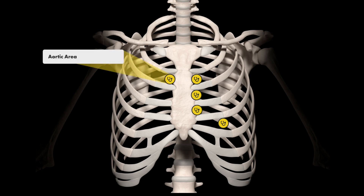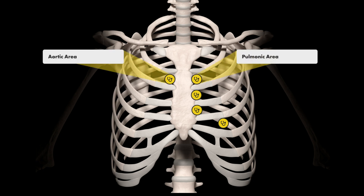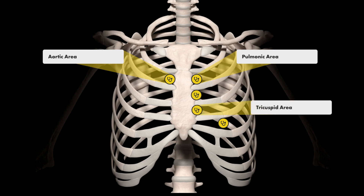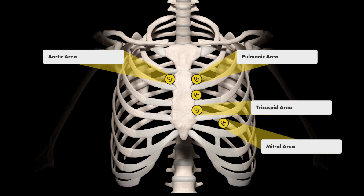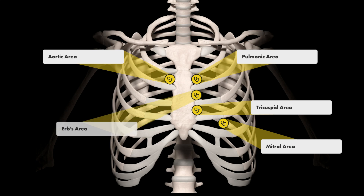This is the aortic area, the pulmonary or pulmonic area, the tricuspid area, and the mitral area. The fifth area of auscultation is Erb's point, or Erb's area, located here.